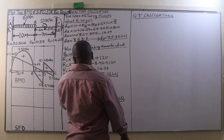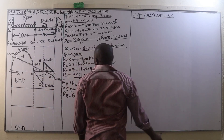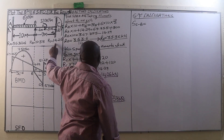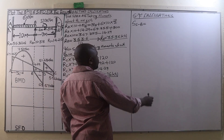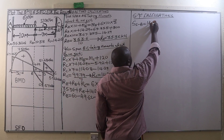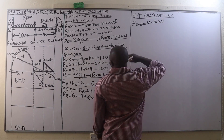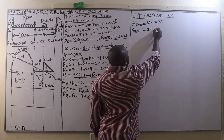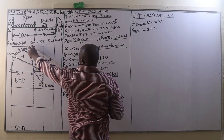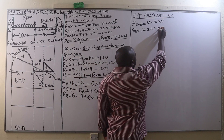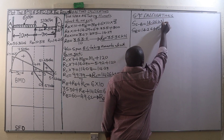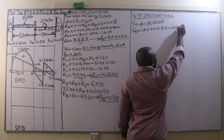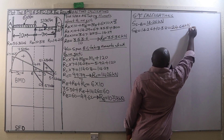The shear force between C and B is equivalent to the reaction at C, which is 14.26 kN. Then the shear force at support B is 14.26, and we add the reaction at B, which is 10.38. That gives us a shear force of 24.64 kN at B.